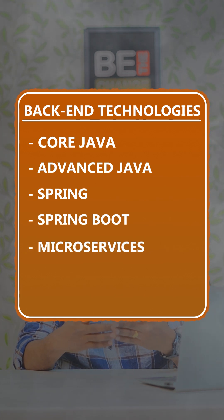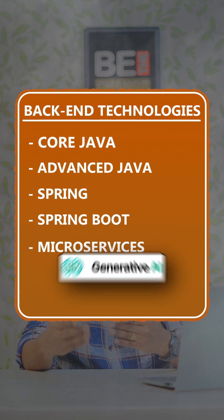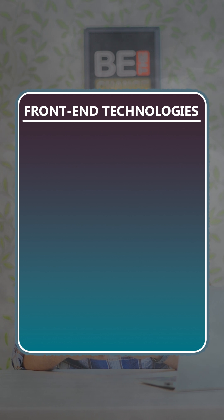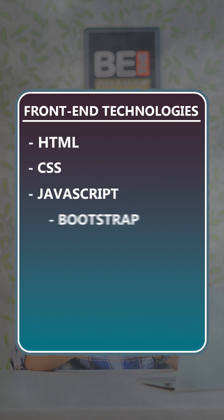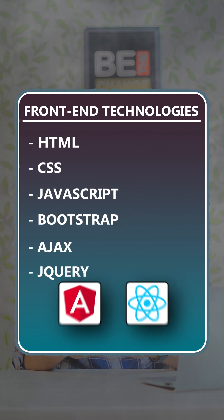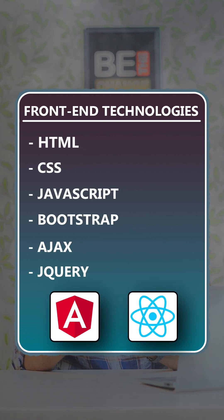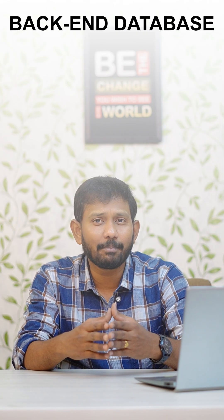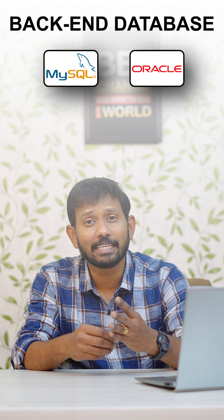With these frameworks we are introducing Gen AI. Front-end technologies include HTML, CSS, JavaScript, Bootstrap, Ajax, jQuery, and frameworks like Angular and React.js. For back-end database we are going to cover MySQL and Oracle.